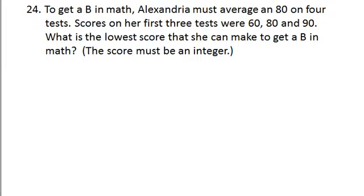To get a B in math, Alexandra must average an 80 on four tests. Scores on her first three tests were 60, 80, and 90. What is the lowest score she can make to get a B in math? And the score must be an integer.